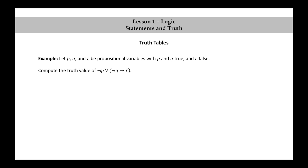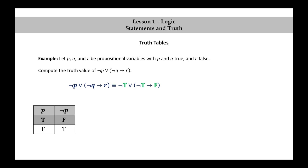Let's look at a more advanced example. Let P, Q, and R be propositional variables with P and Q true and R false. We start with the statement and replace each propositional variable by its truth value — replacing P by T, Q by T, and R by F. Now we'll use the truth table for the negation to evaluate not T. The negation of true is false.